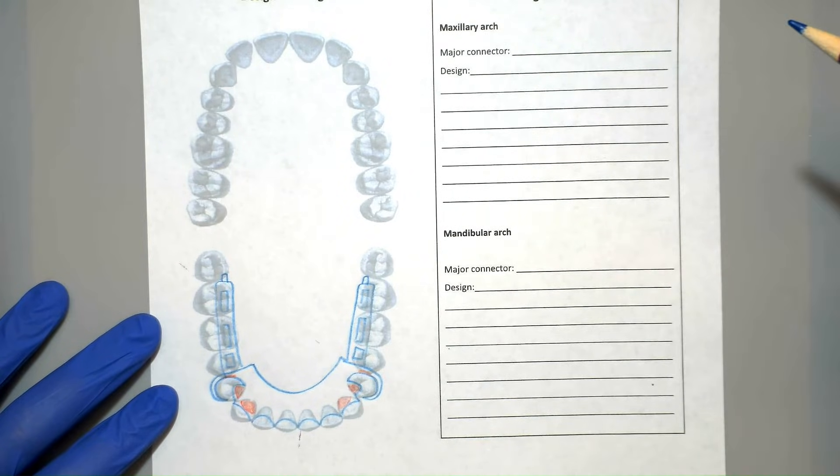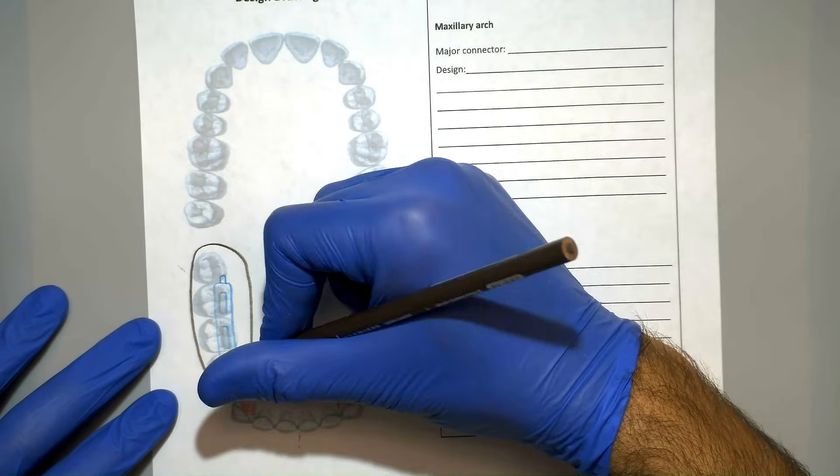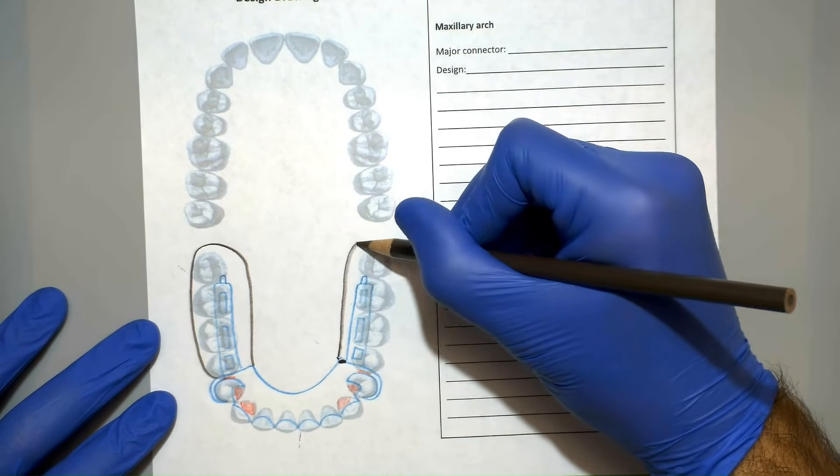Then we'll add the denture base which goes from the finish line all the way to the guide plane on the other side.